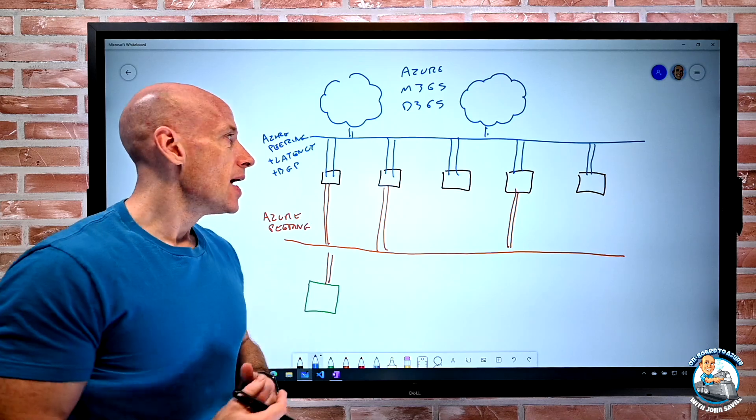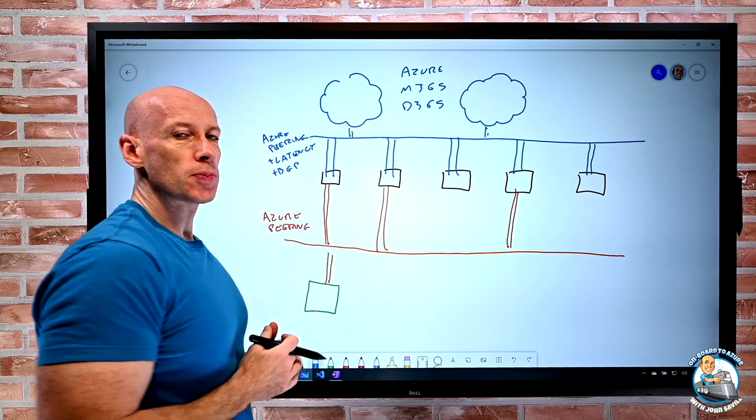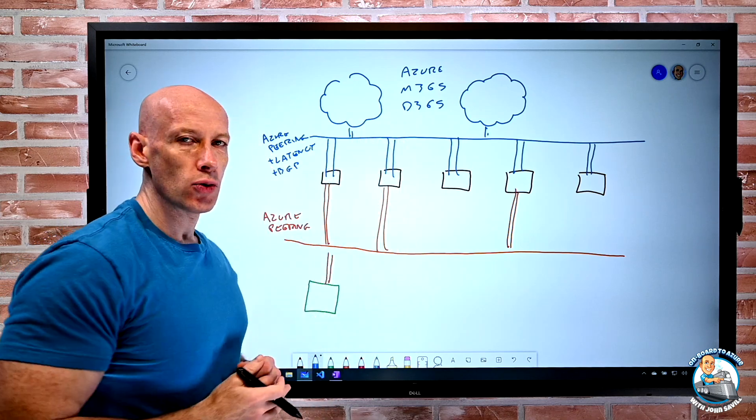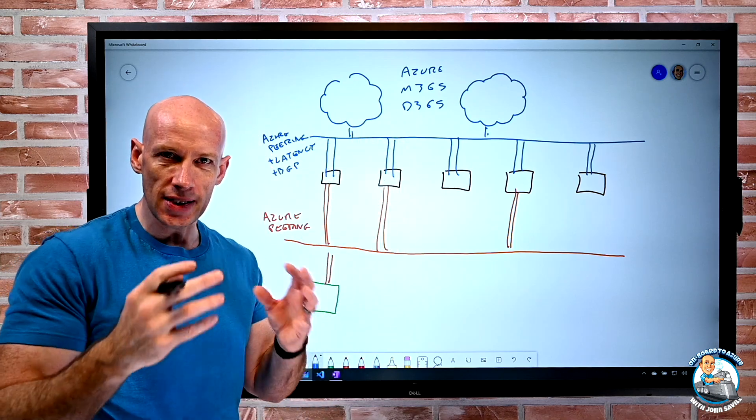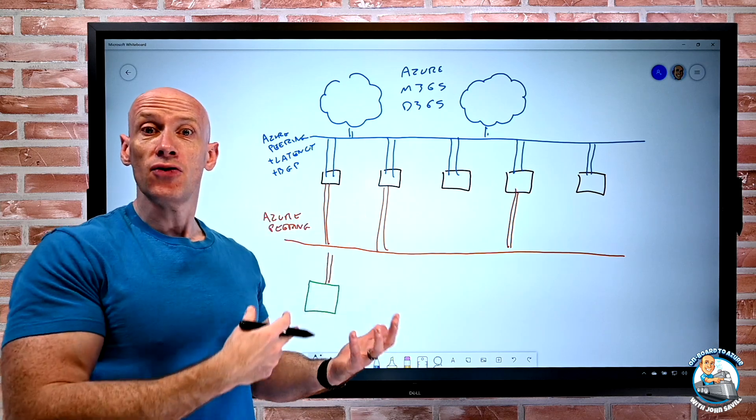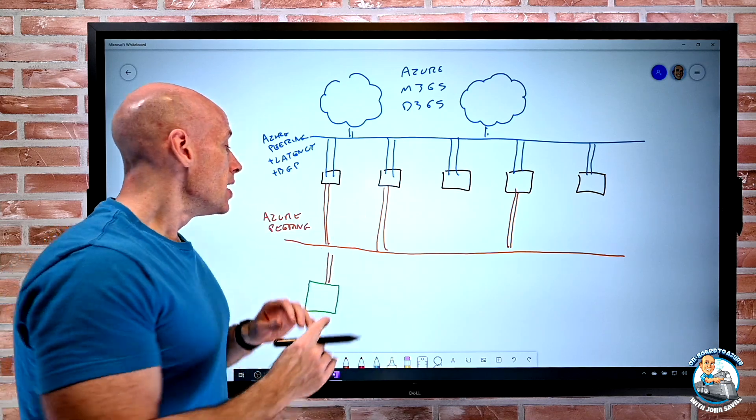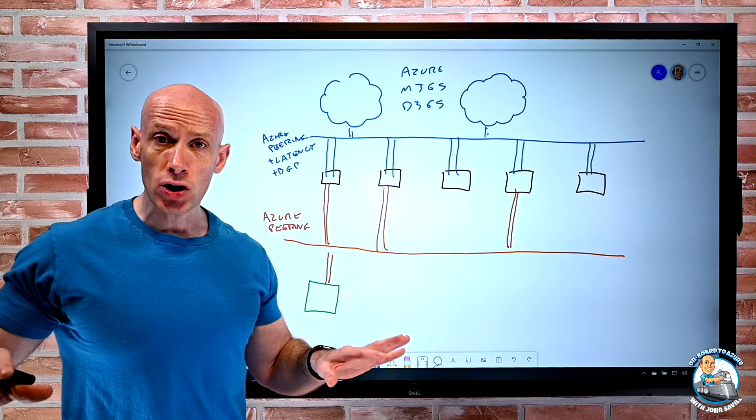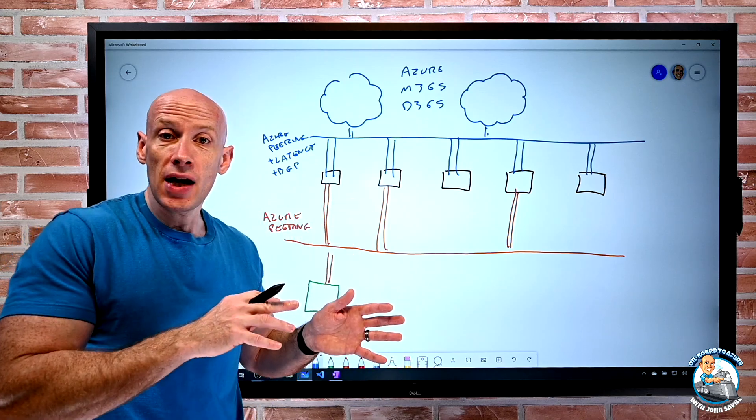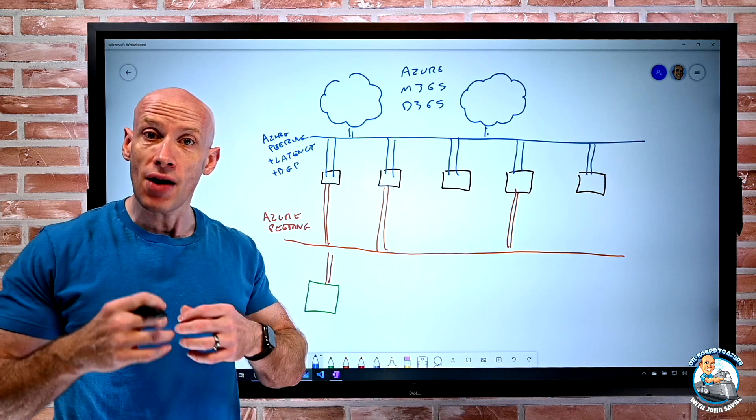The Microsoft network is the preference and it will stay on the Microsoft network as long as possible and then offload at the point closest to you. So again, that's that cold potato that I talked about in the previous video when we talked about routing preference. Azure peering is nothing to do with ExpressRoute. It is not private peering. It is not Microsoft peering. It is not a private connection.